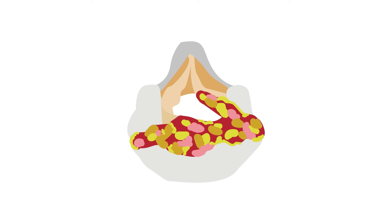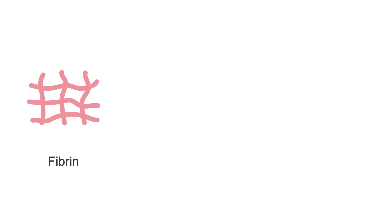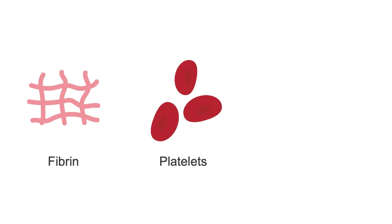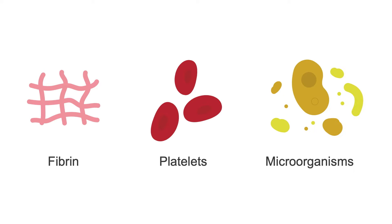Prosthetic valve endocarditis, or PVE, is a microbial infection of the valve. The lesions, called vegetations, consist of fibrin, platelets, and infectious microorganisms.